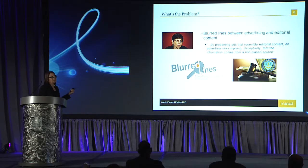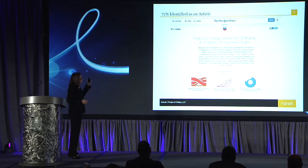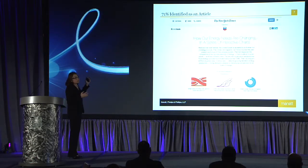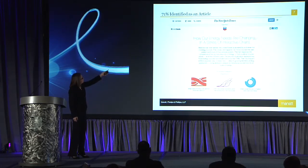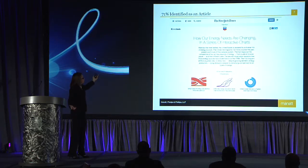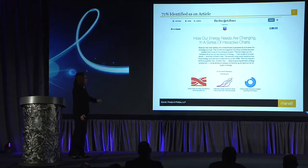There was a national survey done by an independent researcher looking at a couple of different types of native ads, and the results are interesting in terms of where the FTC ultimately ended up. The first was a paid post that appeared on the New York Times site. You can see the little chevron logo there, and the disclosure was 'paid post' right above the article. Only 71% of consumers who read this identified it as an article, meaning less than 30% actually knew it was an ad.